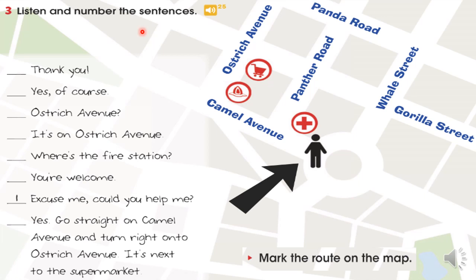Track 25. Excuse me, could you help me? Yes, of course. Where's the fire station? It's on Ostrich Avenue. Ostrich Avenue? Yes. Go straight on Camel Avenue and turn right onto Ostrich Avenue. It's next to the supermarket. Thank you. You're welcome.